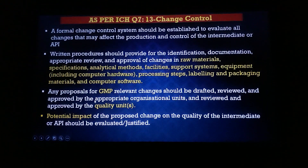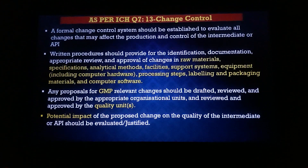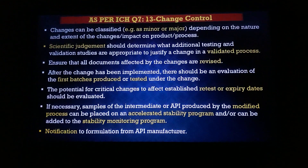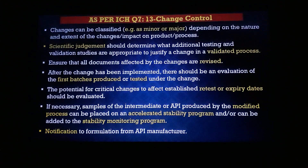Any proposal for GMP-relevant changes should be drafted, reviewed, and approved by the appropriate organizational units — meaning the quality unit. The potential impact of the change on the quality of the intermediate or API should be evaluated and justified. Changes can be classified based on the nature, extent, and impact on the product and process — as minor or major. Scientific judgment should determine what additional testing and validation studies are appropriate to justify a change in a validated process.